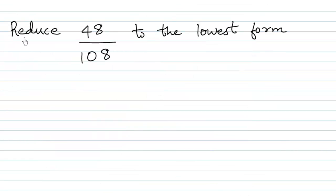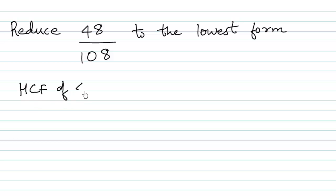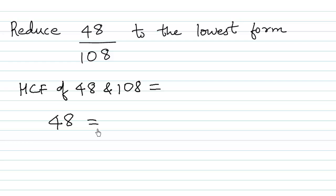Another application of HCF or GCD is to reduce fractions, which we will learn in a later part of the course. Knowingly or unknowingly we use the HCF to find the lowest possible form of 48/108. So we are going to find the HCF of 48 and 108. Let us factorize 48.